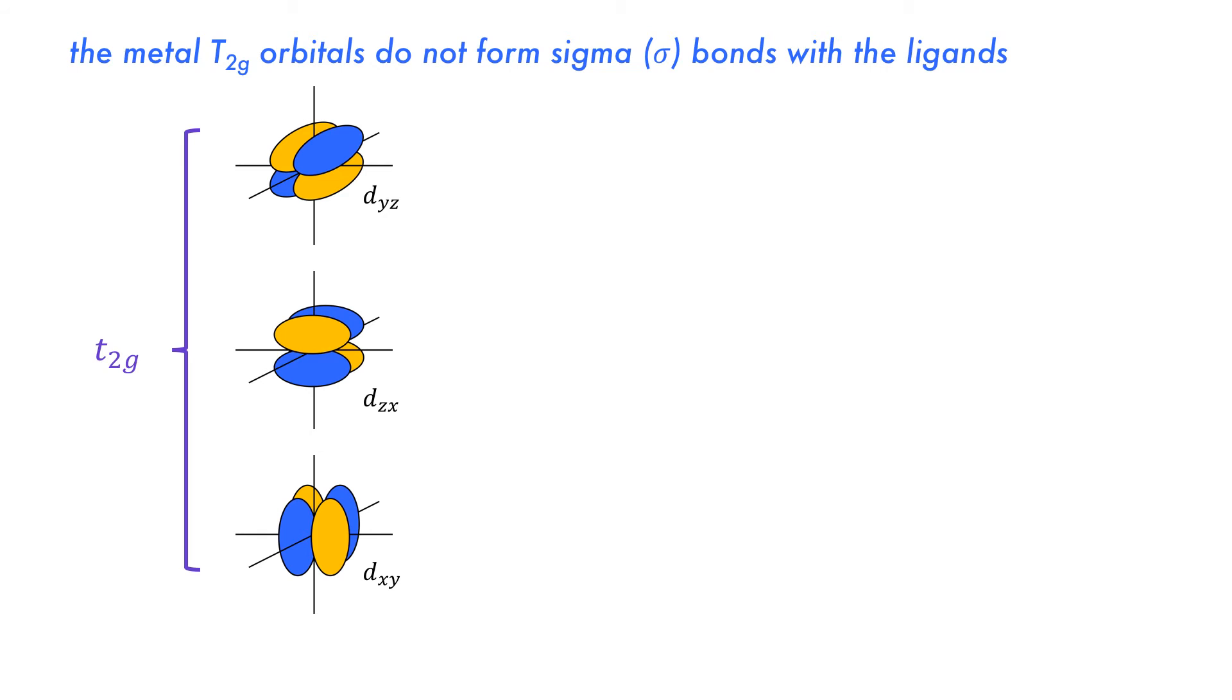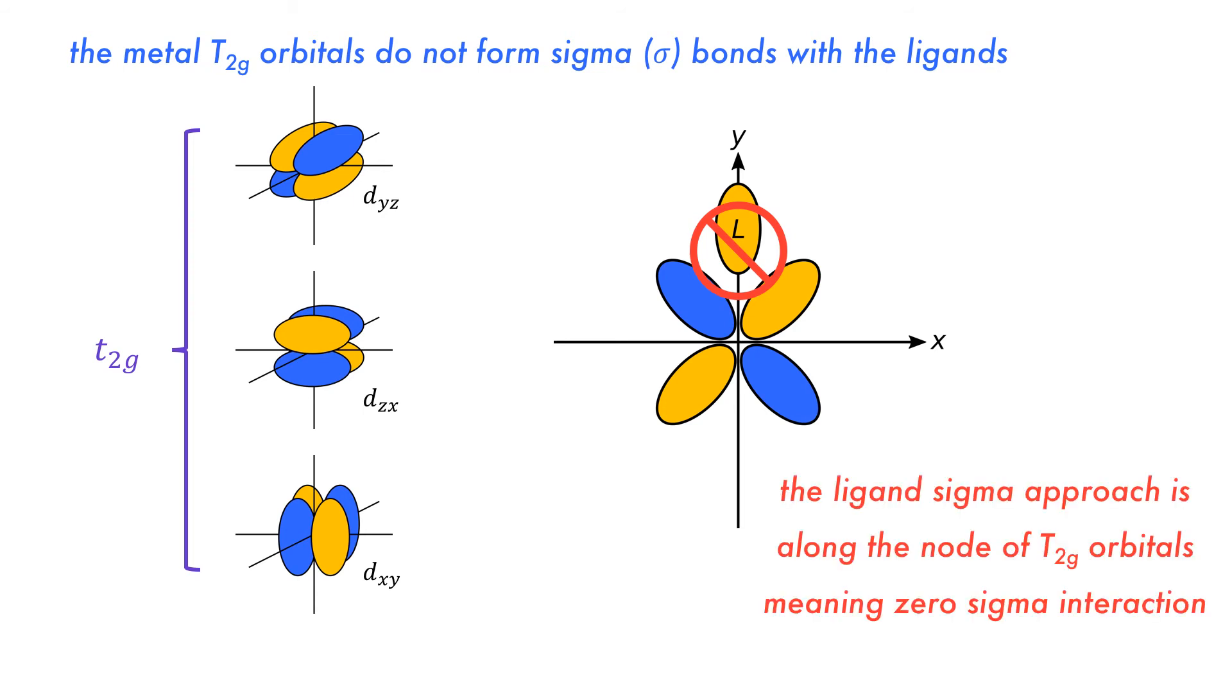This then leaves the t2g metal orbitals, the dyz, zx, and xy orbitals. It can be immediately noticed that there can be no sigma interaction between a ligand and any of these orbitals because the sigma interaction approaches along a node in these orbitals.